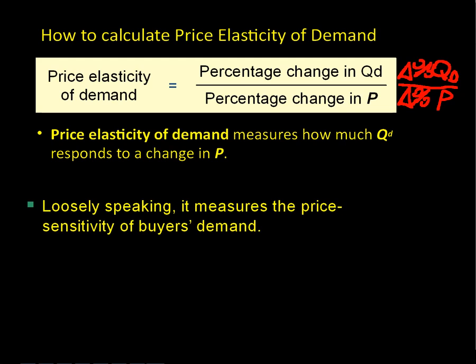In economics class, Q is always going to refer to quantity — we write Q subscript D — and P is going to be price. You'll see that quite a bit; marketers use it, it's one of the five P's. That's the way to memorize the formula.